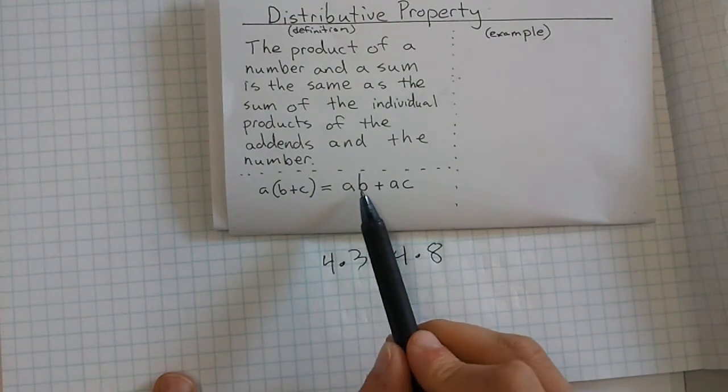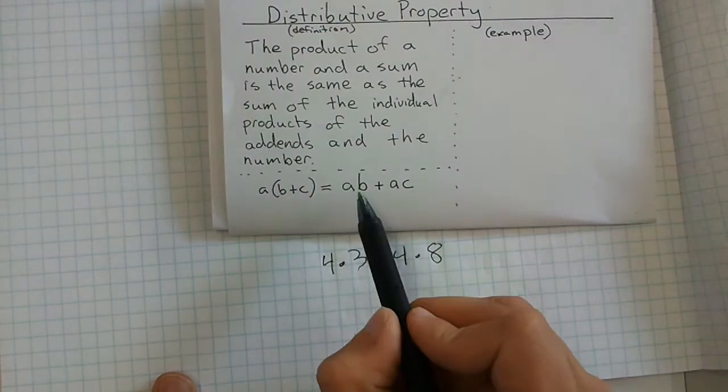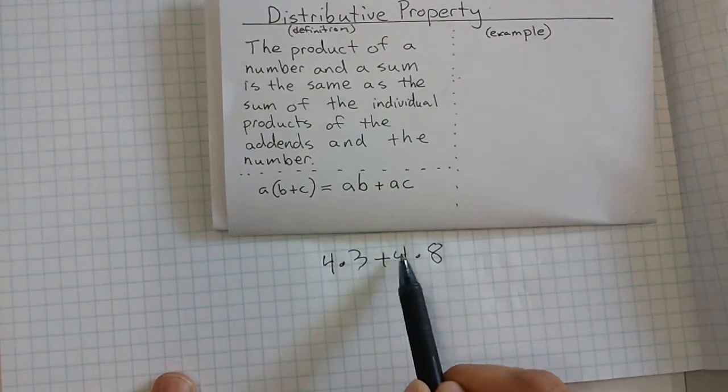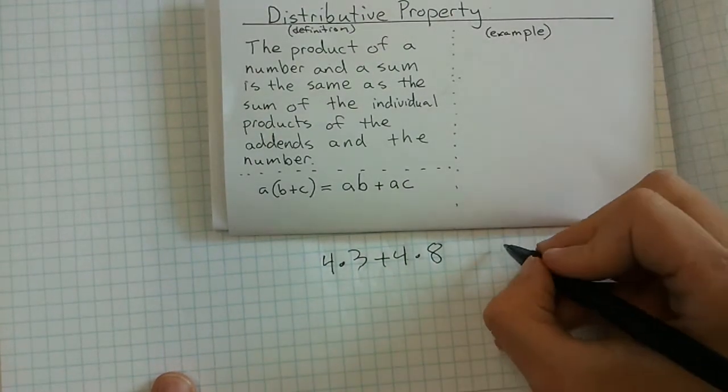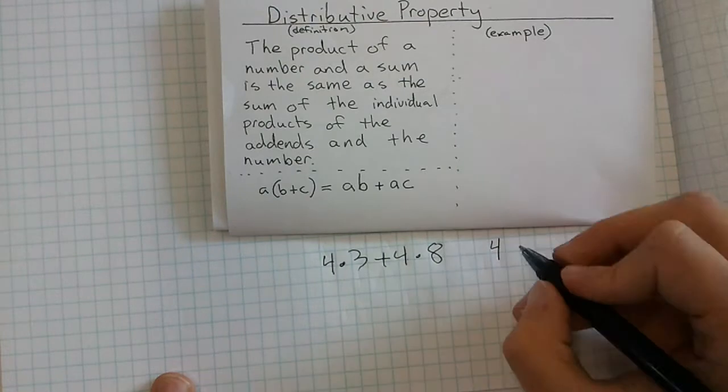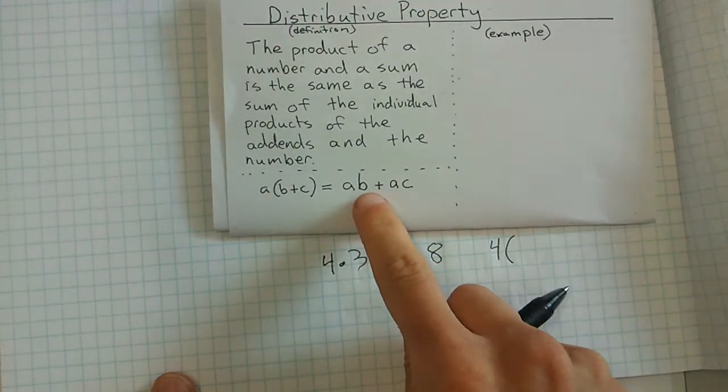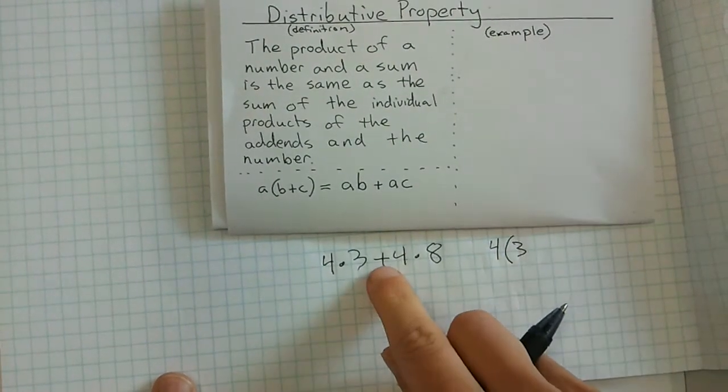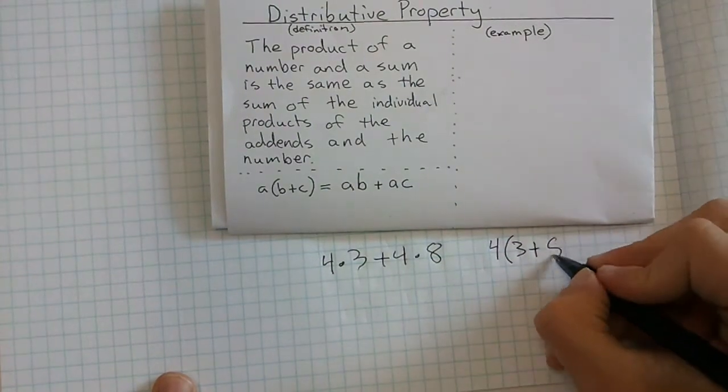Now we had to use the distributive property to rewrite it. I would look again—which side does it look more like? It definitely looks more like this side. I'm seeing two multiplication problems being added together, so I'm going to go backwards and see what's the number that is repeating. I have a 4 being multiplied by both of these, so I could put my 4 on the outside of my parentheses and then say b represents the 3, I'm doing addition, and then the 8 could represent the c.